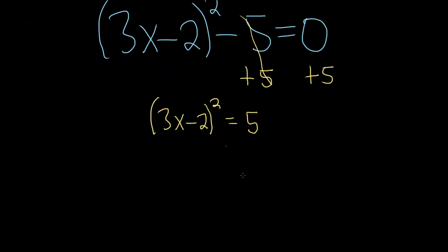All right, so now to get rid of the squared, we use the square root property. That means we take the square root of both sides. On the left-hand side, we just get 3x minus 2. And the important part from the square root property is that here we get a plus or minus, so plus or minus the square root of 5.